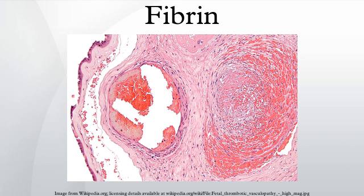Role in disease: excessive generation of fibrin due to activation of the coagulation cascade leads to thrombosis — the blockage of a vessel by agglutination of red blood cells, platelets, polymerized fibrin, and other components. Ineffective generation or proteolysis of fibrin predisposes to hemorrhage.